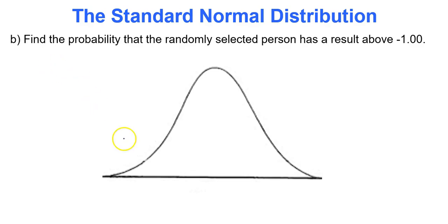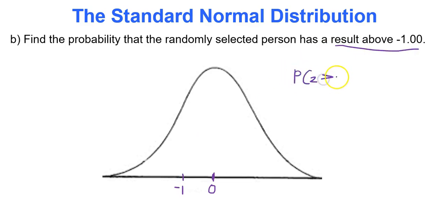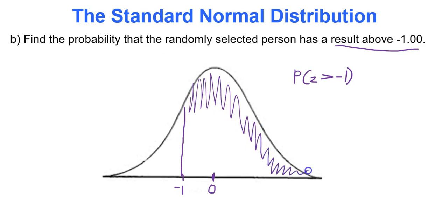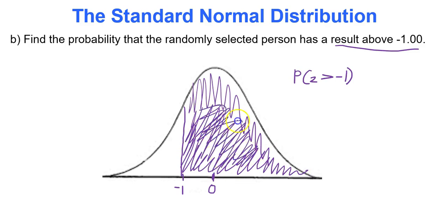Find the probability that the randomly selected person has a result above negative 1. In your bell curve, put 0 in the middle and plot negative 1 to the left. We're looking for P(z > -1), so that's the area to the right of negative 1 — shade that region. The problem is the table only tells us area to the left. So let's find the area to the left of negative 1 first, then we'll discuss.